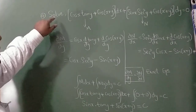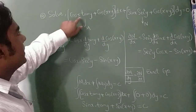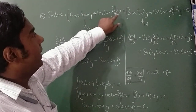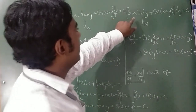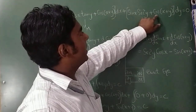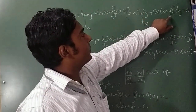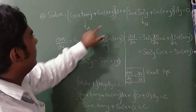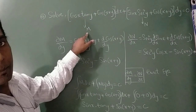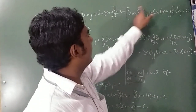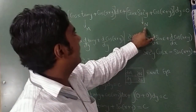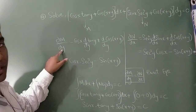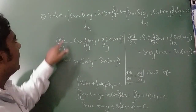Question 4: Solve [cos x·tan y + cos(x+y)] dx + [sin x·sec²y + cos(x+y)] dy = 0. M = cos x·tan y + cos(x+y) and N = sin x·sec²y + cos(x+y). Differentiating M with respect to y: cos x is constant so d/dy of tan y = sec²y, and d/dy of cos(x+y) = -sin(x+y).